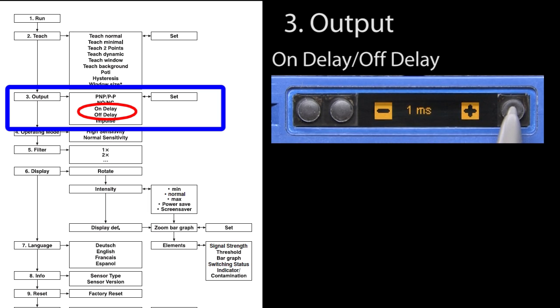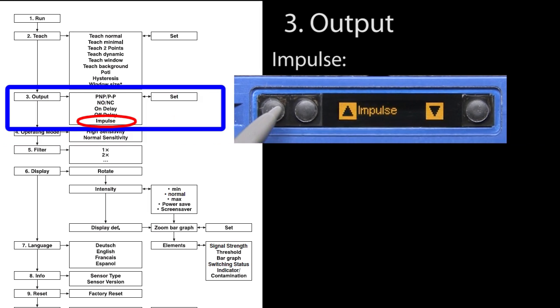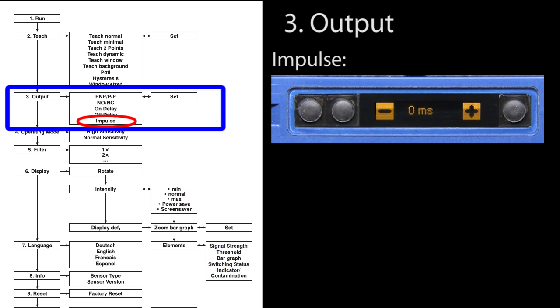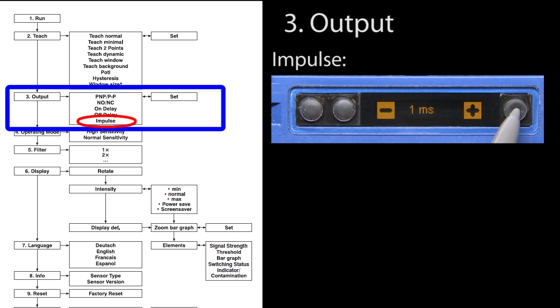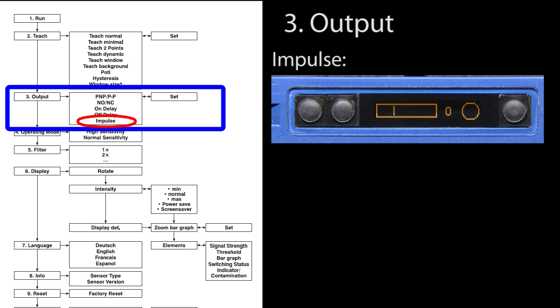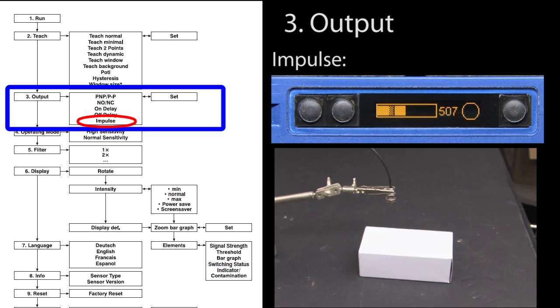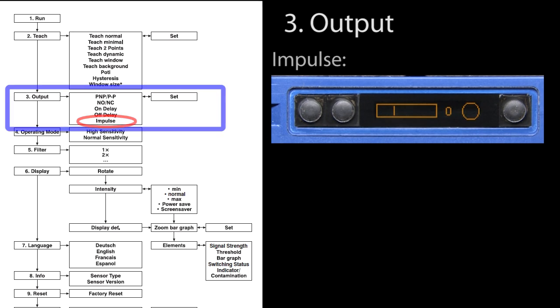For on delay, you can change the value from 0 to 10,000 milliseconds. Off delay is the same. You can specify an impulse output instead of a discrete high or low and specify the width of that impulse. Notice that every time the digit cycles, it starts incrementing the next digit so getting to large numbers is pretty quick. Let's set it to 1 second and exit back out to run mode. If we put an object in front of the sensor head, we see the output only lasts for 1 second. Exactly what we expect.